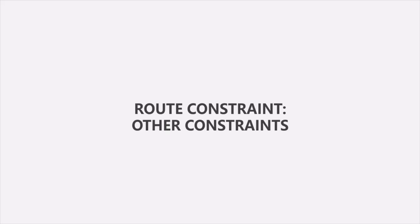In the last lecture, we learned about some route constraints like int, alpha, datetime, etc. These are the data types which we can assign for a route parameter. Now let's continue that lecture and learn about some more route constraints which we can use on a route parameter.